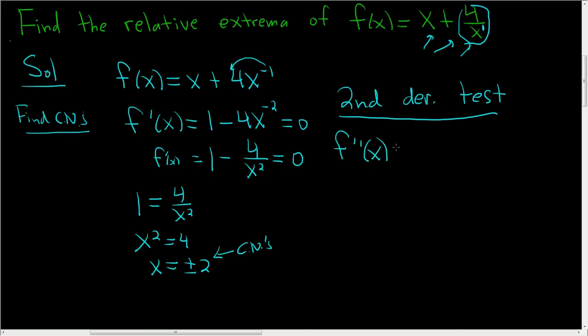So f double prime of x. Well, looking here at the first derivative, the derivative of 1 is 0. Here you take the negative 2 and bring it downstairs. So we get 8x and then negative 2 minus 1 is negative 3. So the second derivative is 8 over x cubed.